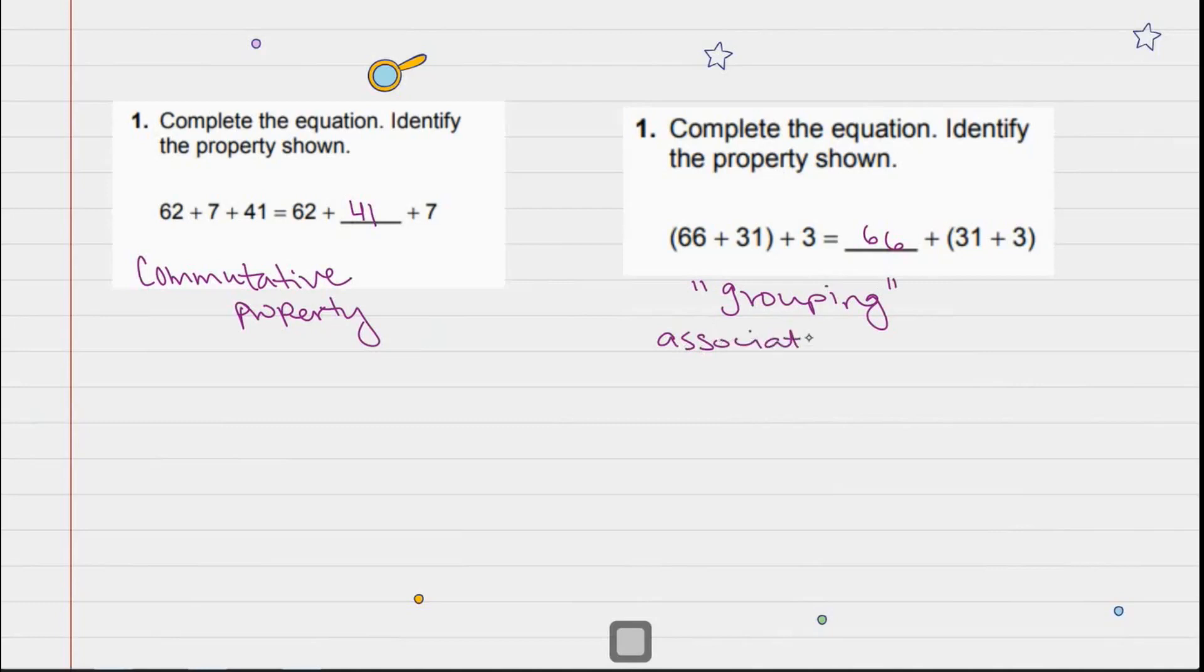But what property is associated with the grouping? I remember grouping is the associative property. I remember this by people want to associate in groups. Commutative property is move—it's associating with moving the numbers around. Very good.